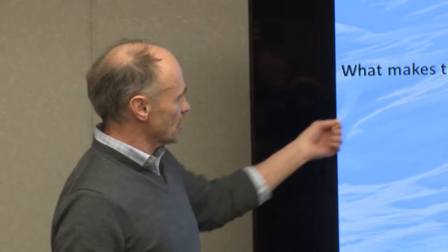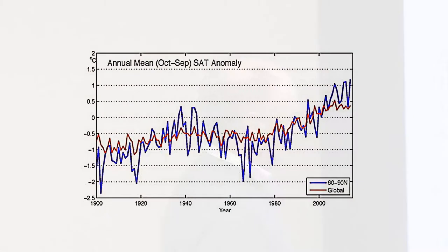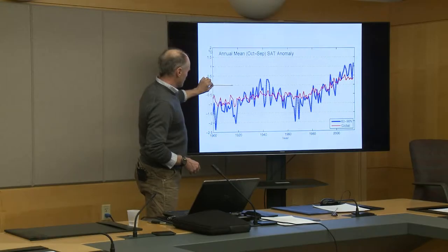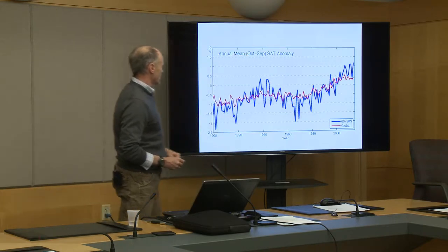A question that arises is that animals usually have periods of high and low population trends — it's naturally driven. So what makes this decline different than other declines? Will these caribou recover? In order to answer that, we look at the annual mean October-to-September temperature anomaly from 1900 to the present. Between 60 and 90 degrees north, temperatures are changing at a much faster rate than globally — in the sub-Arctic and Arctic systems, climate change is more pronounced.